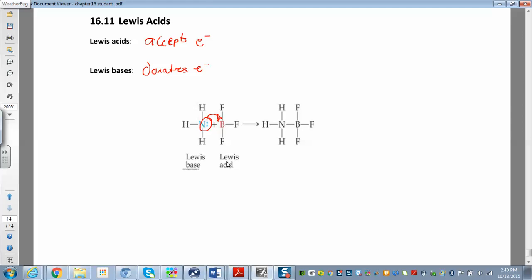Some other things that make good Lewis bases, Lewis bases are things like the hydroxide ion. It has all these extra electrons that makes a good Lewis base. Water, cyanide, all those things. We'll see those again in chapter 17. We'll start looking at some Lewis bases.